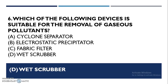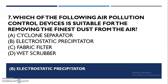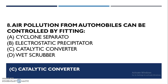Which of the following devices is suitable for removal of gaseous pollutants? It is wet scrubbers. Which air pollution control device is suitable for removing the finest dust from the air? It is the electrostatic precipitator. Air pollution from automobiles can be controlled by fitting a catalytic converter.